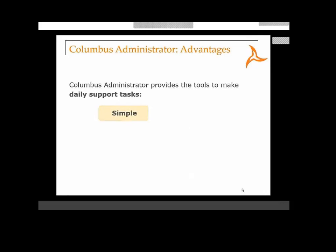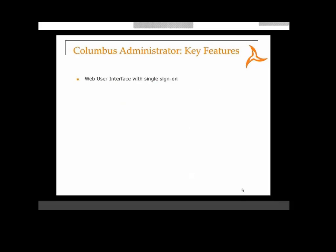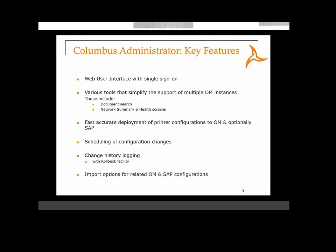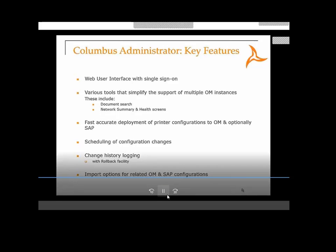In conclusion, Columbus Administrator is a powerful tool to help support staff manage their OM printer environment. It's a web user interface with single sign-on. It has various tools that simplify the support of multiple OM instances, and supports fast, accurate deployment of printer configurations to Columbus OM and, if required, SAP. You can schedule changes to take place at specified times, and those configuration changes are logged and can be rolled back if required. It also has the ability to import relevant configurations from OM and SAP.